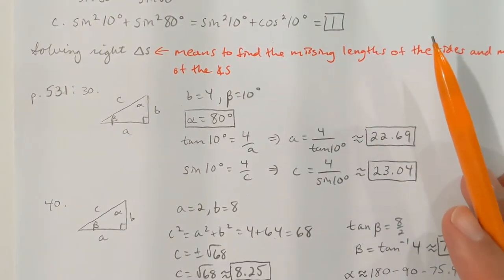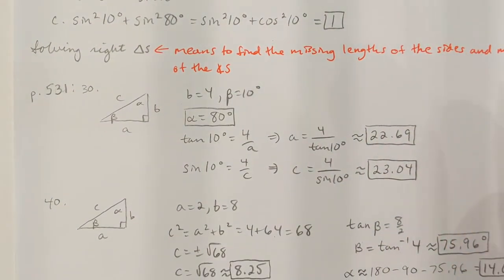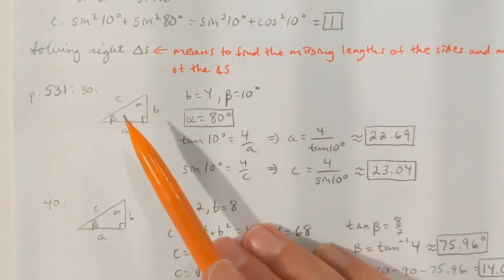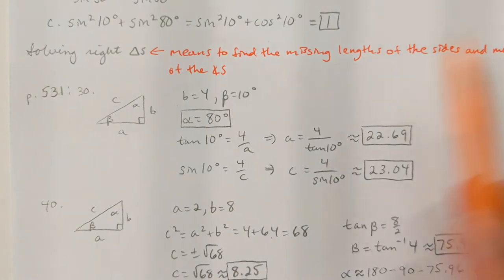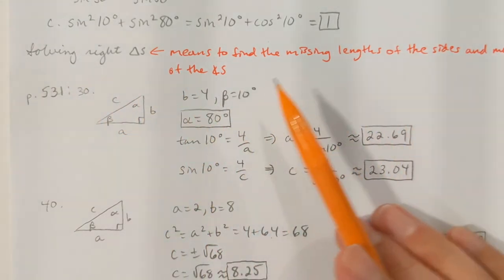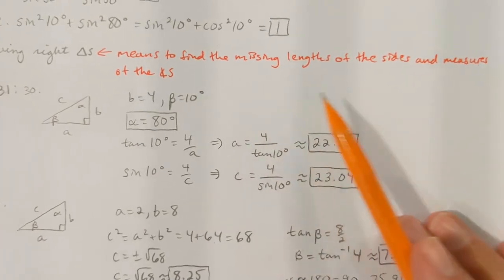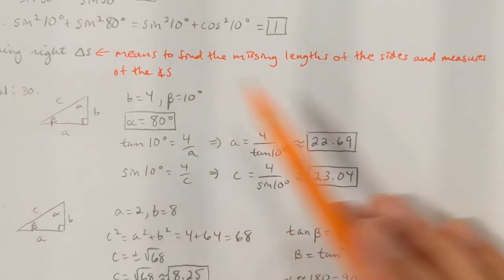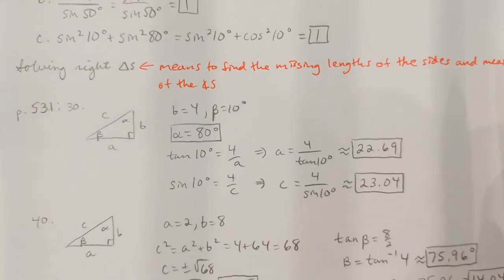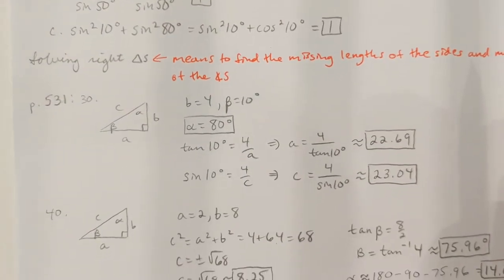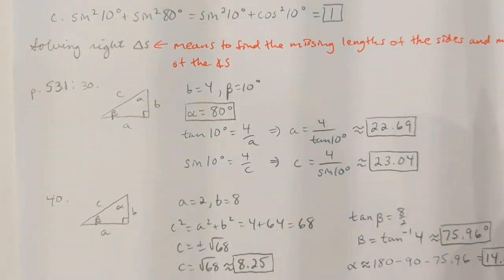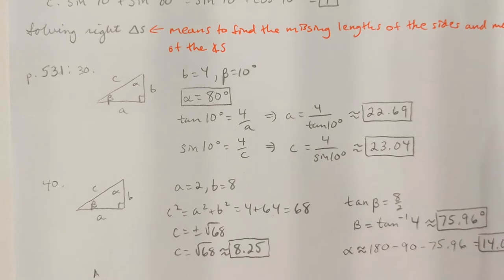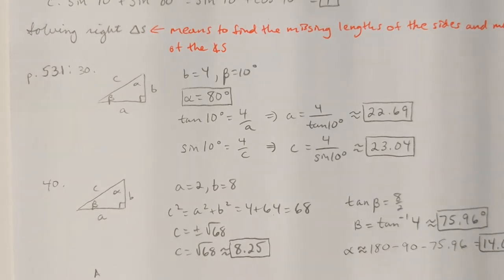In this section, we're going to focus on right triangle trig. A lot of Chapter 8, as I mentioned, is solving right triangles. What it means to solve a triangle is finding the missing side lengths and angle measurements — we'd like to know all three sides and all three angles. Of course, in a right triangle, we already know one angle is 90 degrees. I thought the best way to handle this section would be to do a couple of problems from the book, page 531.